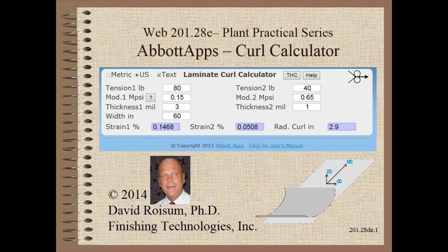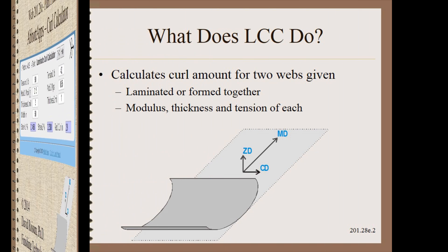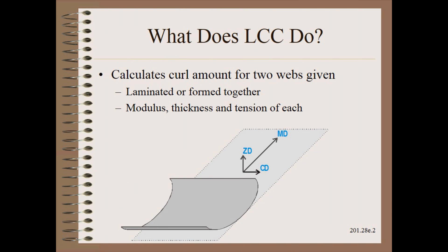It can be used by anyone working with simple constructions. The Laminate Curl Calculator calculates the amount of curl for 2-ply webs. All you need to know is the modulus, thickness, and tension for each ply.